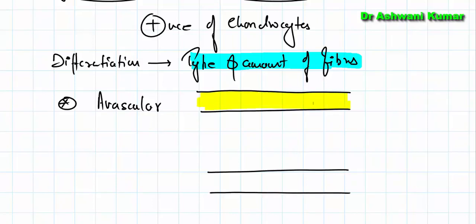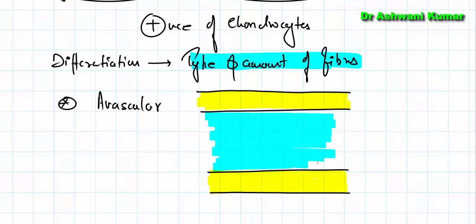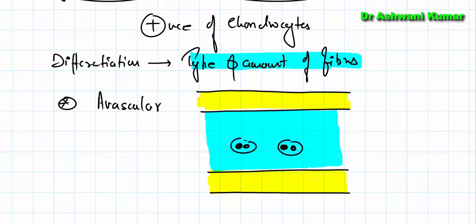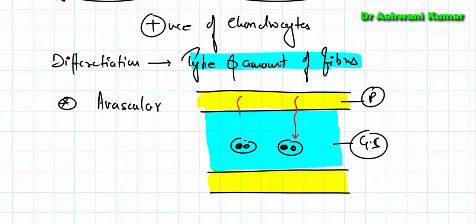The perichondrium surrounds the ground substance where the chondrocytes are present. The blood vessels in the perichondrium supply the chondrocytes via diffusion through the ground substance.